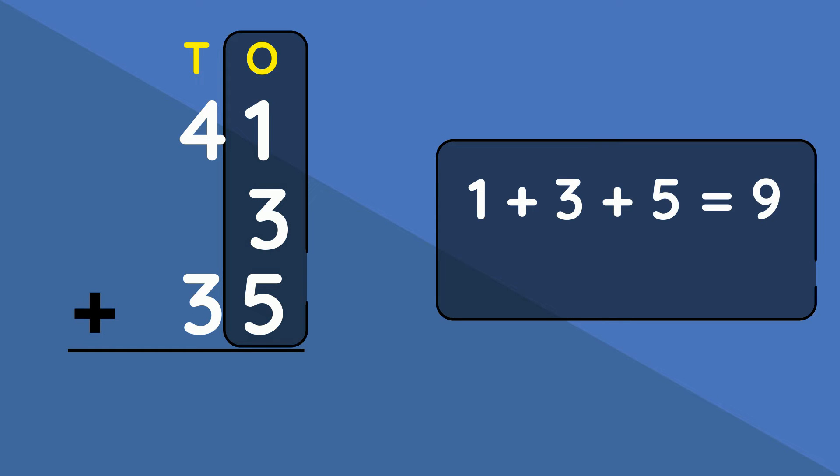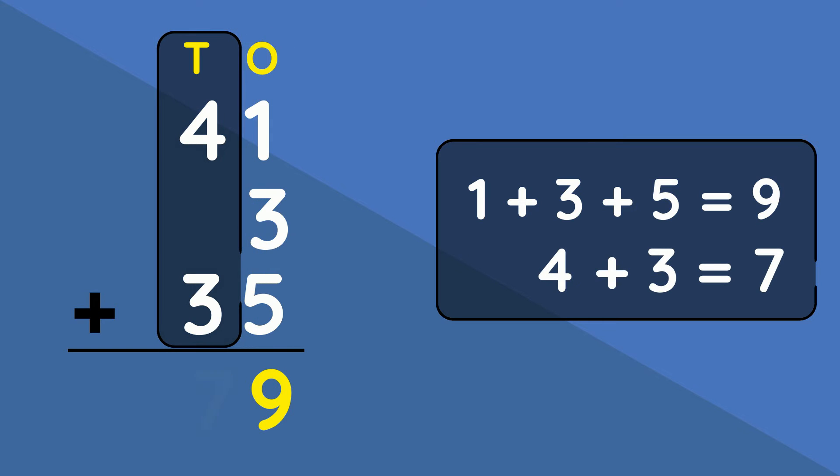One added to three added to five gives us nine. And then in the tens column, we have four added to three, which gives us seven, so that answer is 79.